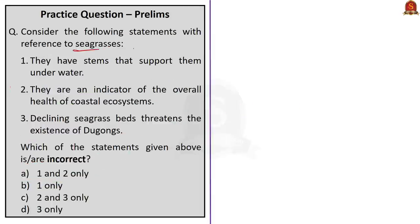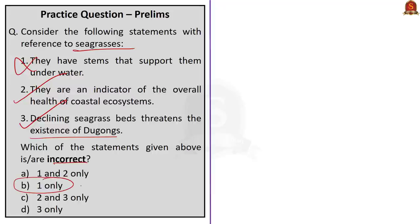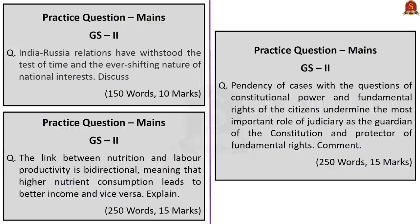The second question is a three-statement question based on seagrasses. Statement 1: They have stems that support them underwater — this is incorrect, as seagrasses do not have strong stems; they are supported by the buoyancy of water. Statement 2: They are an indicator of overall health of coastal ecosystems — this is correct. Statement 3: Declining seagrass beds threatens the existence of dugongs — this is also correct, as seagrass beds provide food for dugongs and other herbivores like sea turtles. The question asks for incorrect statements, so the correct answer is Option B: Statement 1 only.